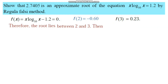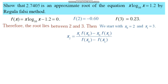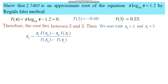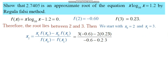We start with x₀ = 2 and x₁ = 3. Using the Regula Falsi formula: x₂ = x₁ minus f(x₀)·(x₁ minus x₀) divided by (f(x₀) minus f(x₁)). Substituting those values and simplifying, we obtain x₂ ≈ 2.723.